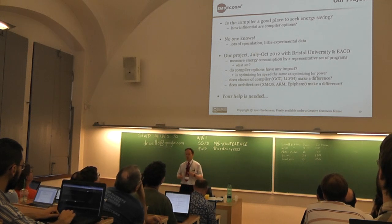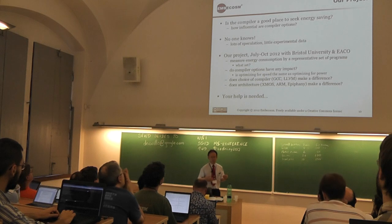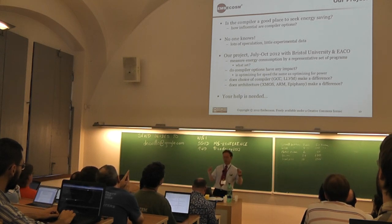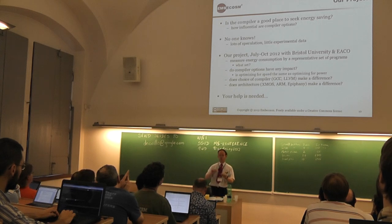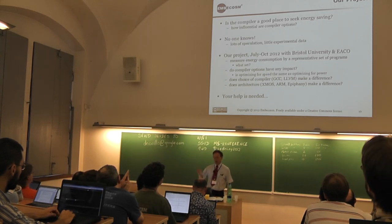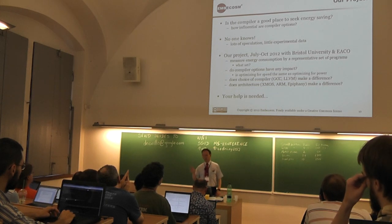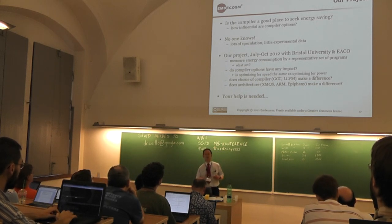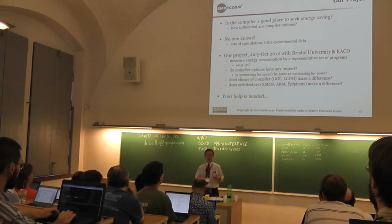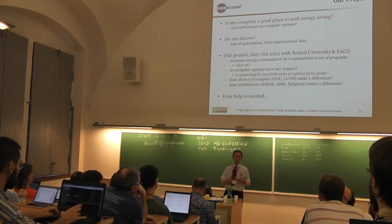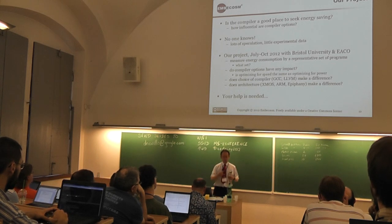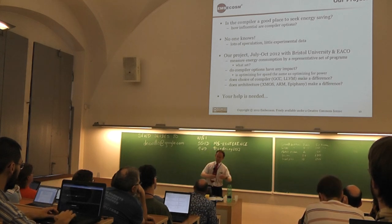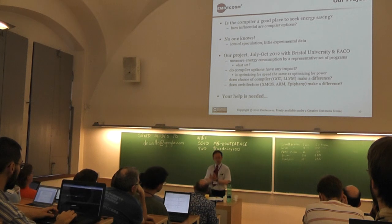That brings us to our project. We're looking just at the compiler's role — one little bit of that story. The key question is: do your compiler choices and decisions affect the amount of energy consumed by an application? We're really interested in energy — the total amount consumed — not the rate at which it's consumed, which is power. It's no use being low power if your program takes forever to run, because you'll end up using a lot of energy anyway. So it's the total energy use that matters.